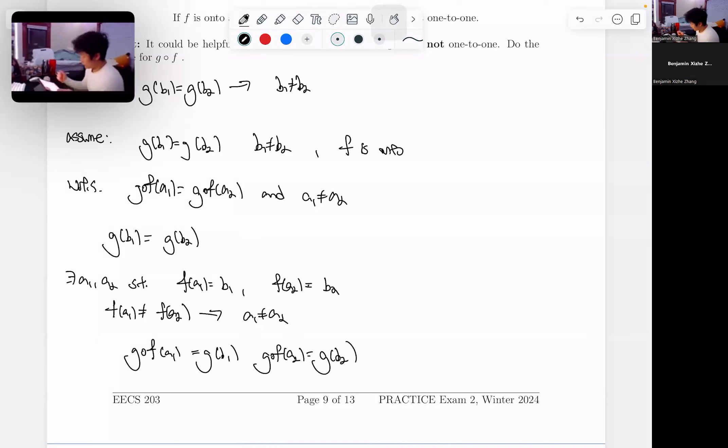We have assumed that these things are equal. So these things, g of b1, g of b2, these are equal under our assumption. So we know that g of f of a1 equals g of f of a2.